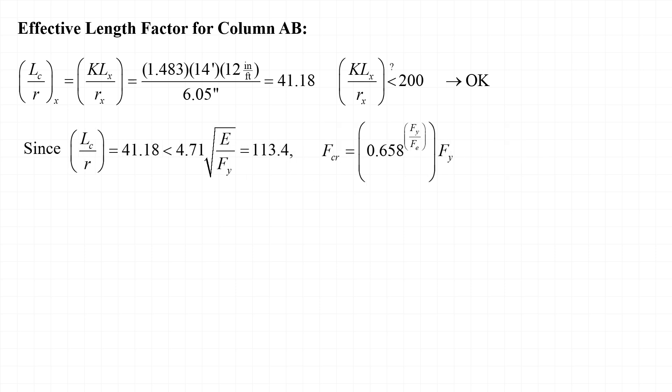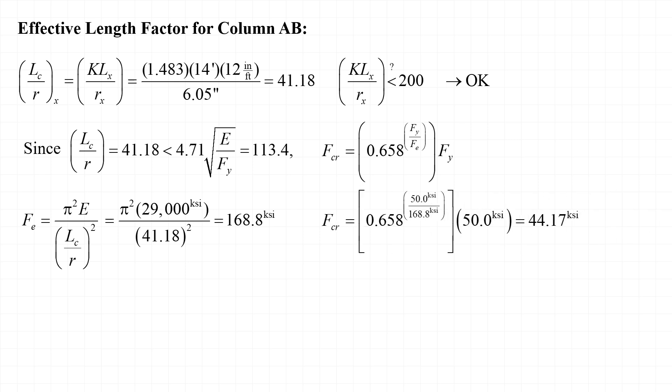Since KL over R is less than 4.71 times the square root of E over F sub Y, F sub critical is equal to 0.658 to the F sub Y divided by F sub E power times F sub Y. F sub E is equal to pi squared times E divided by KL over R squared, and in this case is equal to 168.8 KSI. And then F sub critical is calculated to equal 44.17 KSI. Next, P sub N is equal to F sub critical times A sub G, and in this case is equal to 1060 kips. And then finally, phi times P sub N, the available strength, is equal to 0.9 times the nominal strength, or 954.1 kips.